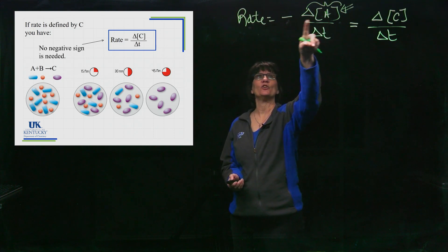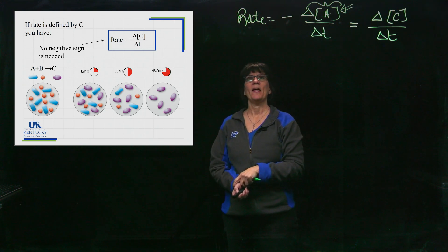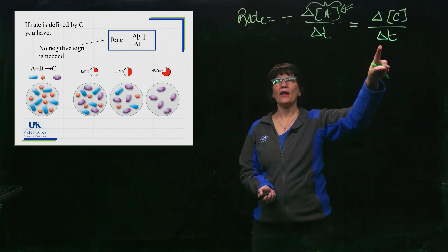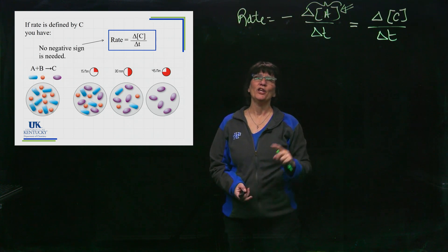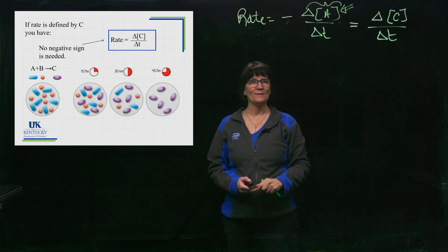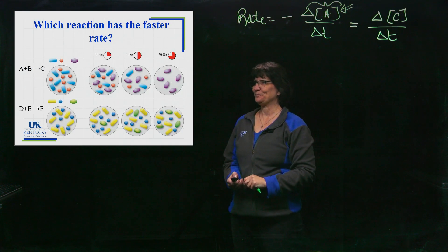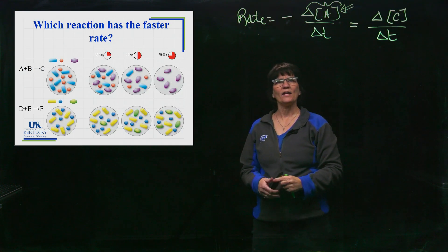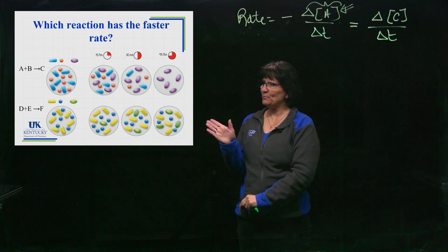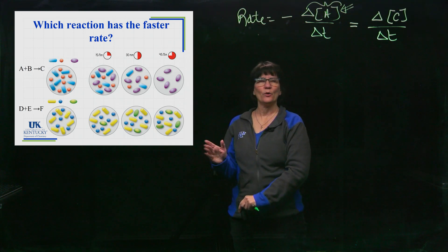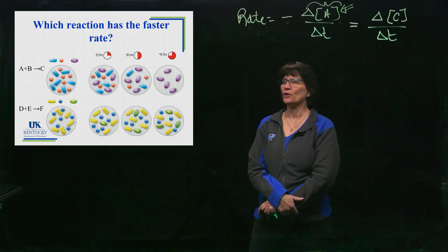So if you're monitoring the rate of the reaction in terms of a reactant, you'll need a minus sign. If you're monitoring it in terms of a product, you won't need a minus sign. You keep in mind that rate is always positive and then everything will work out just fine for you. Okay, now let's look at two different reactions: I have A + B going to C, and then D + E going to F.